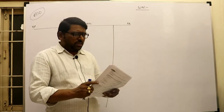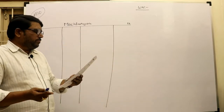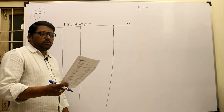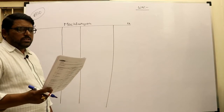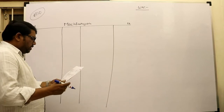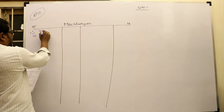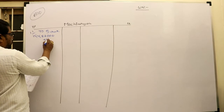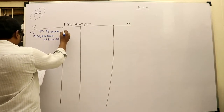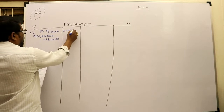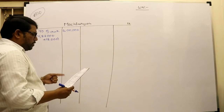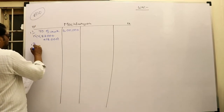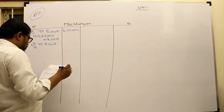Illustration 10 (Sale of Asset): A firm purchased machinery on 1-1-2015 for 1,82,000 plus 18,000 erection charges (capital expenditure), so total cost = 6,00,000. On 1-7-2015, another machine was purchased for 2,00,000. Books are closed on 31st December every year with 10% depreciation on the written down value method.